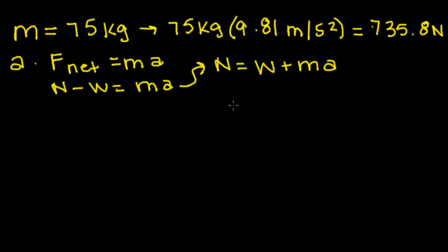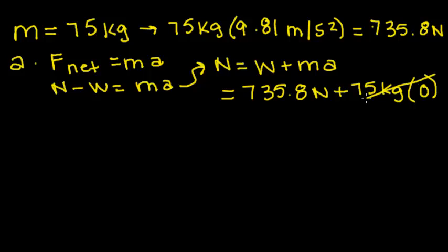For the first part, when we know that the man is motionless, he's not moving up or down in the elevator, we're going to use his weight, which is 735.8 newtons. We're going to add that to his mass, which is 75 kilograms times acceleration of zero because he is motionless. So this is going to be canceled, and this is going to be the man's F net.